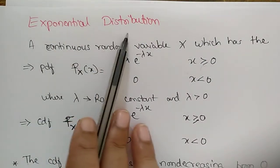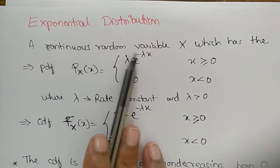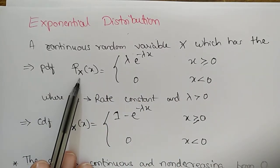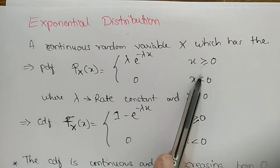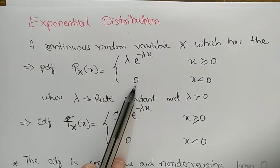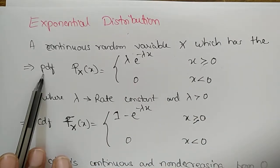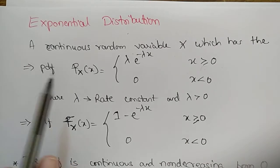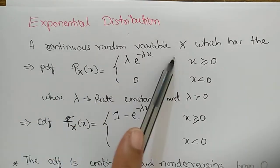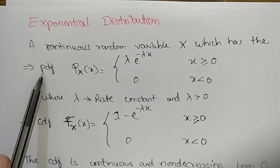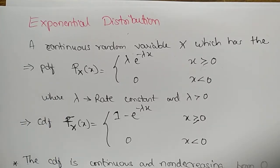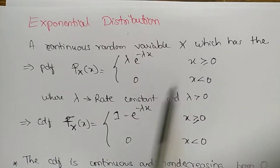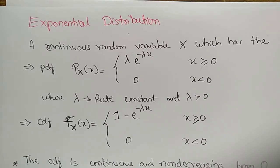Welcome. In today's class we will discuss the exponential distribution. A continuous random variable x has the pdf f(x) = λe^(−λx) when x ≥ 0, and 0 when x < 0. Here pdf stands for probability density function. Since exponential distribution is a continuous distribution, we use pdf rather than pmf. Lambda represents the rate constant and is greater than 0.